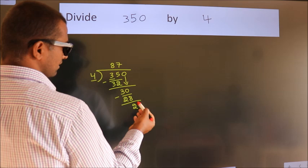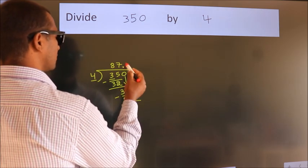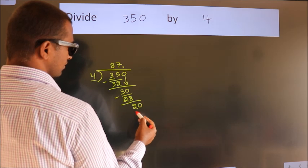After this, no more numbers to bring it down. So what we do is we put dot take 0. So 20.